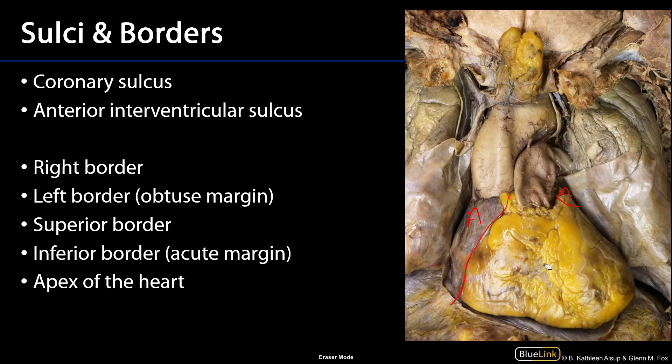In addition to the coronary sulcus there are also two interventricular sulci — an anterior interventricular sulcus approximately here. It's difficult to see with the abundance of adipose connective tissue, but when we get to the coronary arteries we'll see this in greater detail. These two sulci are going to allow us to associate superficial features with chambers that are deep.